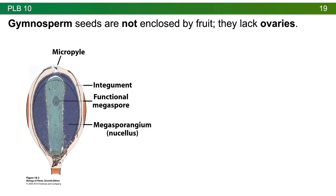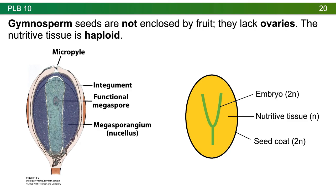If I overlay the seed of a gymnosperm on the megasporangium, you see that the integument layers eventually form the seed coat, but there is no fruit. One reason for this is that gymnosperms lack ovaries — fruit of angiosperms is the product of a ripened ovary. If we have a closer look at a gymnosperm seed, you can see a seed coat, nutritive tissue which is the remains of the megagametophyte and is thus haploid, and then an embryo. There's no fruit, and that nutritive tissue is not triploid as it is in angiosperms — it's not the product of double fertilization, but rather the leftover remains of the haploid megagametophyte.